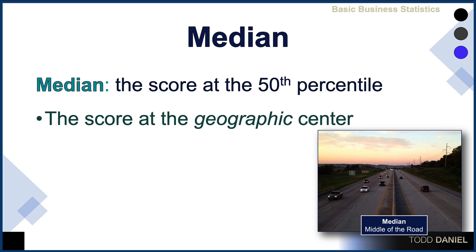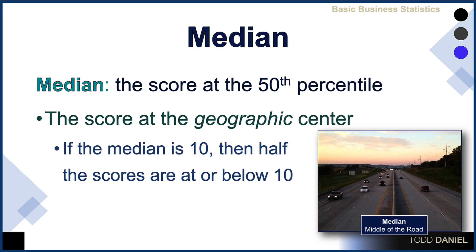In the same way, a median within a data set divides the data specifically in half. If the median is 10, we know that half of the scores are at or below 10, and the remaining scores are at or above 10.